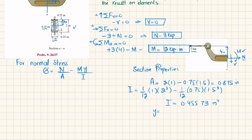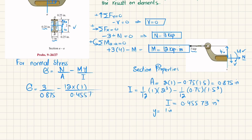The distance y from the neutral axis to point B is 1 inch. We already assumed compression is negative, so: sigma equals 3 divided by 0.875 minus 12 times 1 divided by 0.45573. When solved, the normal stress at point B equals minus 22.90 ksi.